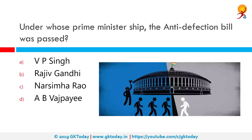Under whose prime ministership was the Anti-Defection Bill passed? This was passed under Rajiv Gandhi. The 10th Schedule of the Indian Constitution, also called the Anti-Defection Act, was amended in 1985 to prevent political defections and to stop politicians from changing parties for the lure of office. The Anti-Defection law bans legislators from jumping parties.